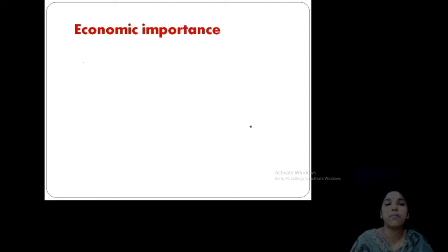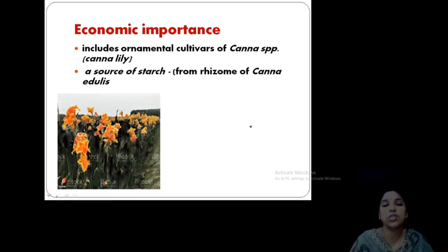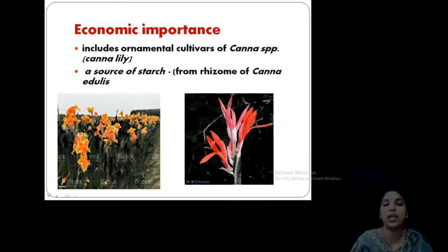Now, looking into the economic importance, you can see this family includes only the ornamental cultivars, Canna species, various types are there, ornamental cultivars. And one species, Canna edulis, that is used as a source of starch. It is a rhizome yielding starch. This is the Canna lily, our common species, Canna indica. Different varieties are available. And this is the Canna edulis. This is Canna indica or Canna lily, different varieties available, different colors available. This is a very common occurrence.